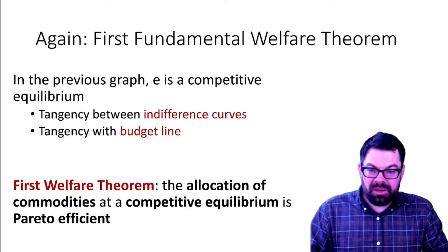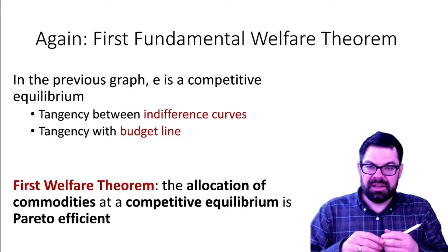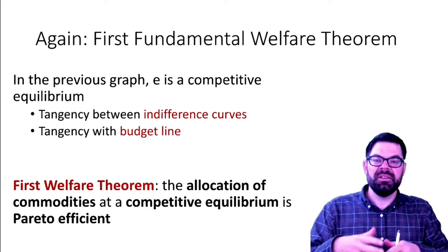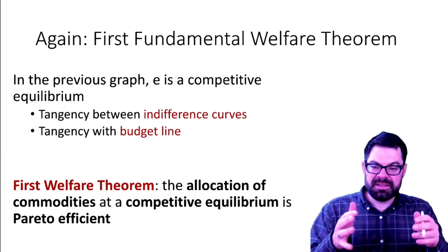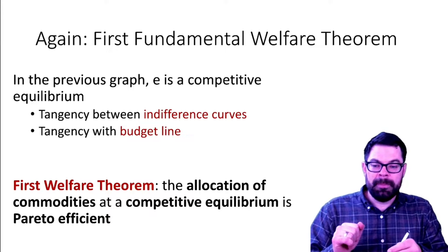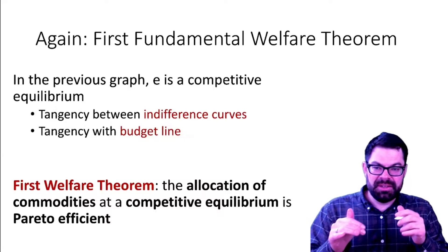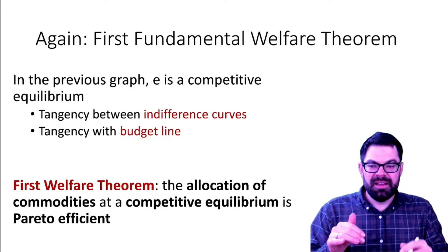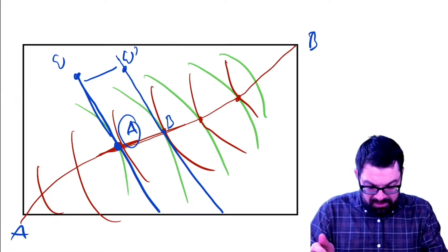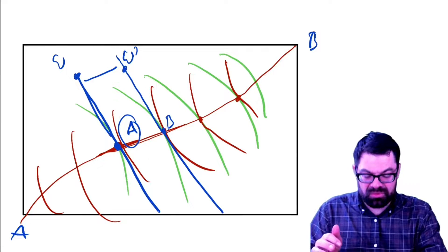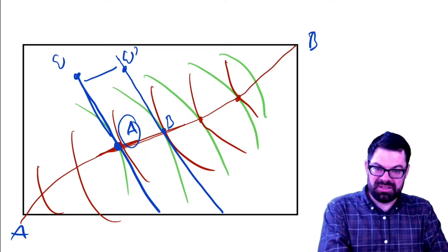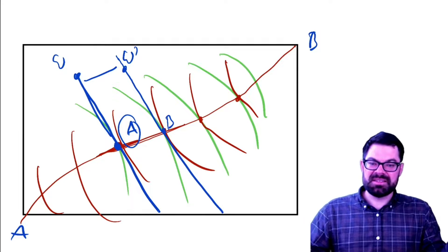So before we go into redistribution, which is what we're going to do in the next video, let us first revisit the first fundamental welfare theorem. And let's view it through the lens of Pareto efficiency. And what the first welfare theorem simply tells us is that the allocation of commodities at a competitive equilibrium, at any point where those two indifference curves and the budget constraint are tangential, is Pareto efficient.